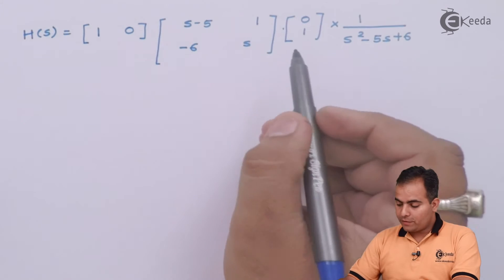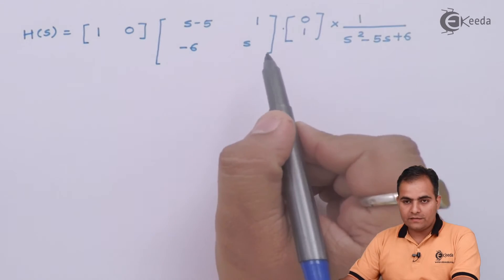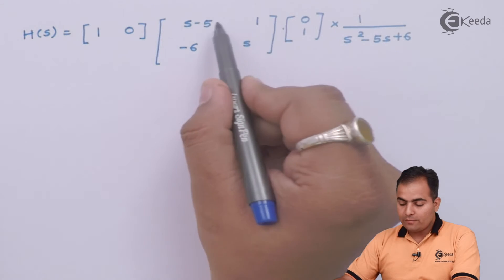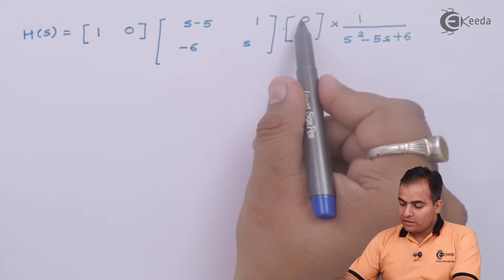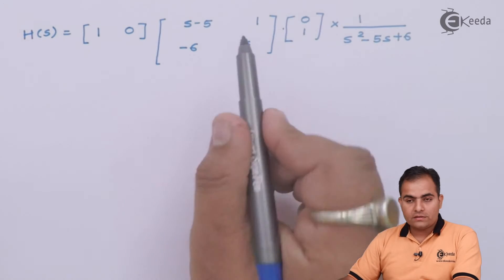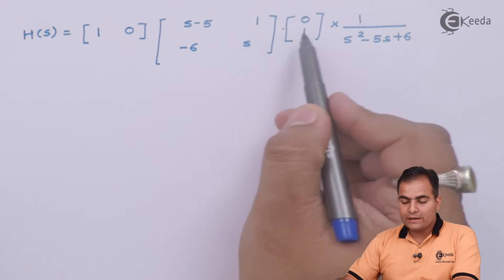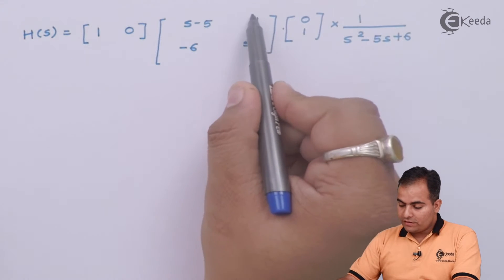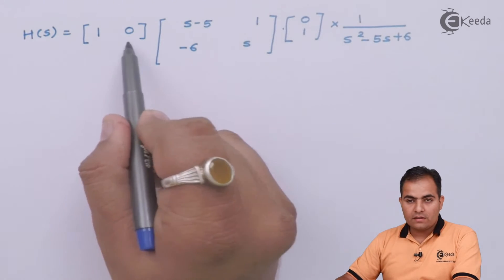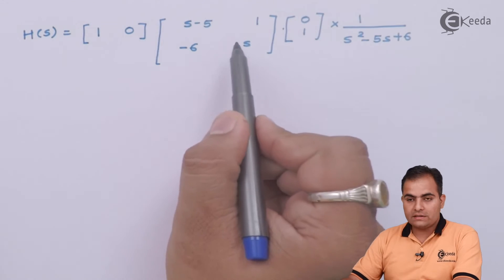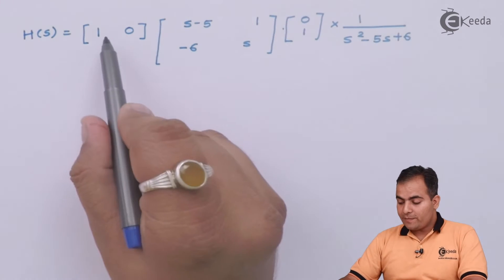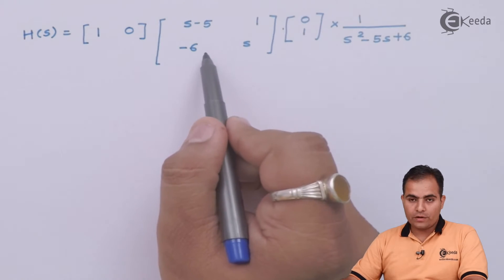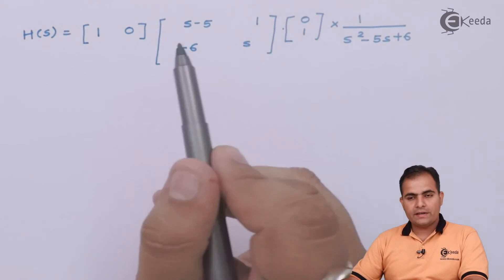Alternatively, I can multiply B with (sI - A)⁻¹ first: 0·(S-5) + 1·1 = 1 for the first element, and 0·(-6) + 1·S = S for the second element, giving the column [1, S]. Then multiplying with C: 1·1 + 0·S = 1. Either multiplication order gives the same result of 1.